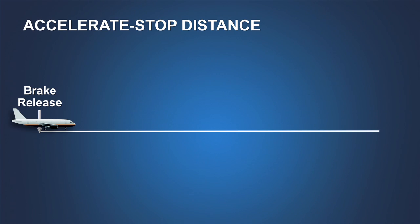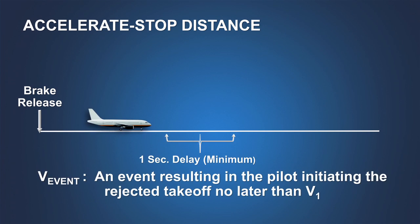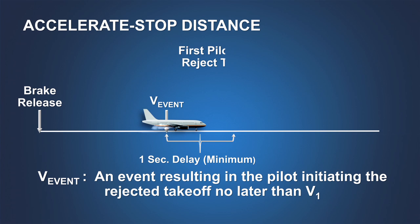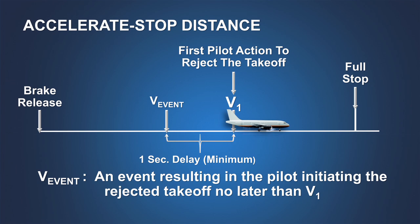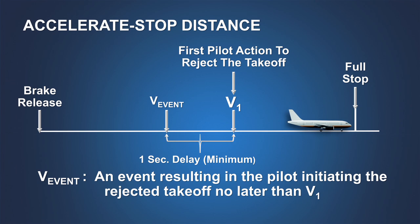Of particular importance is accelerate stop distance, or the distance required to accelerate to a point in the takeoff, then in response to an event, take the first action to reject the takeoff at a speed no greater than V1 and to bring the airplane safely to a stop.